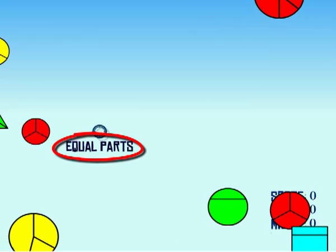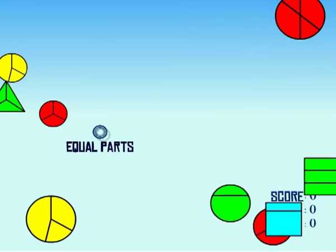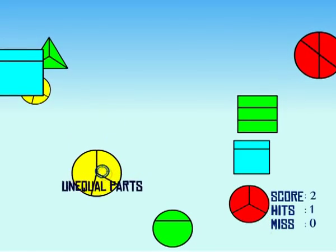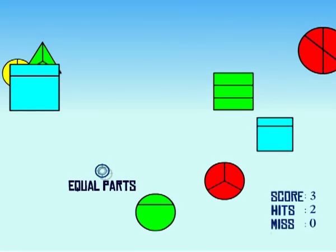If the cursor says equal parts, you click on a shape with equal parts, like this one, and score points. If it says unequal parts, then you click on a shape where the parts are different.